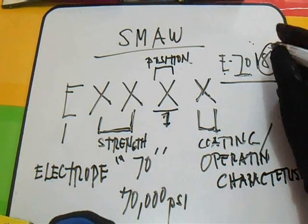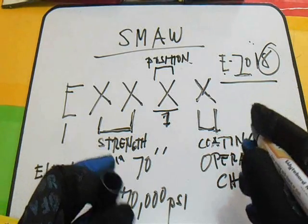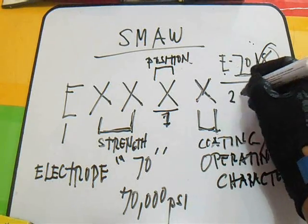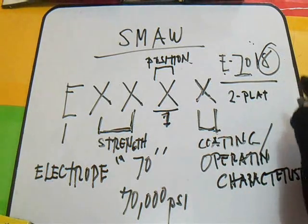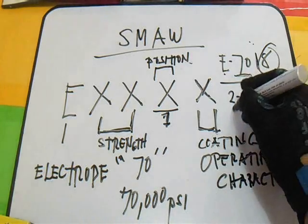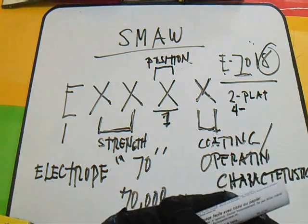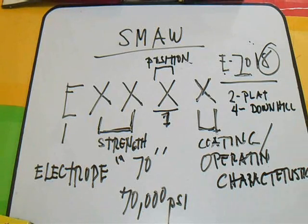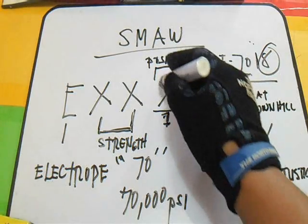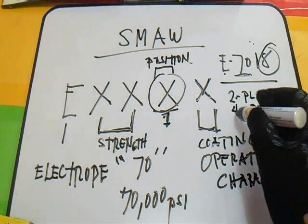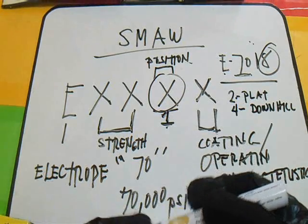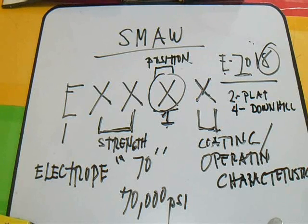Position 2 means the electrode is used only for the flat position. Position 4 is suitable only for downhill progression. So position 1 = any position, position 2 = flat only, and position 4 = downhill only. That's all for now — thanks for watching, see you next time!